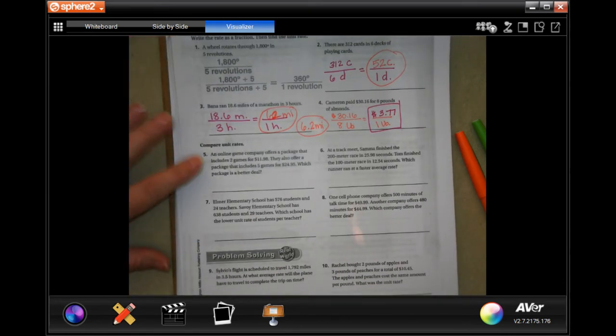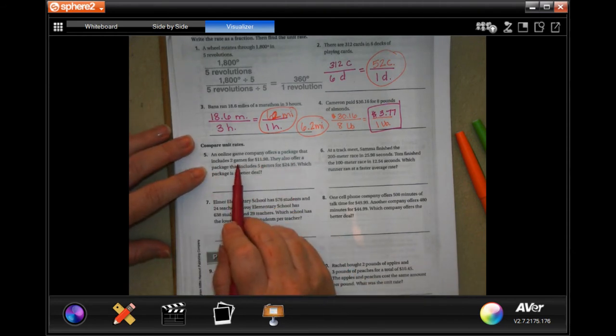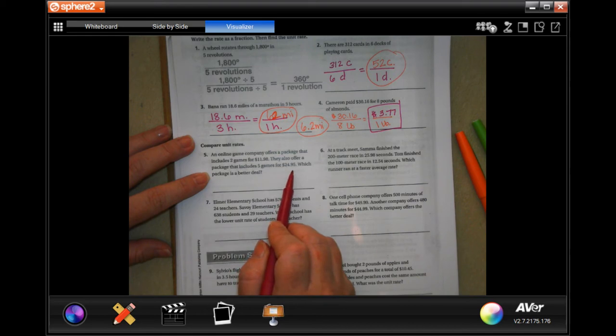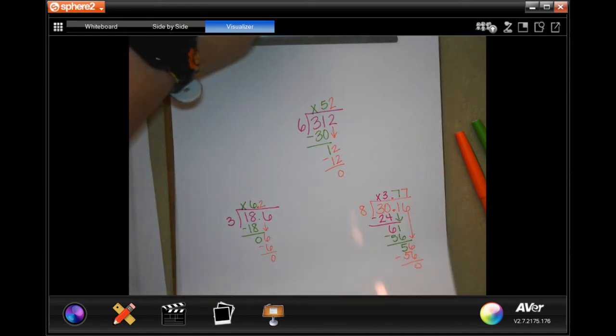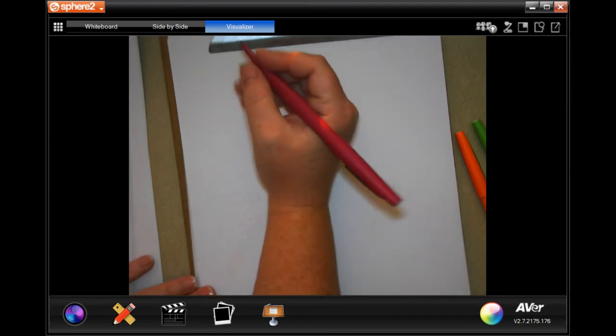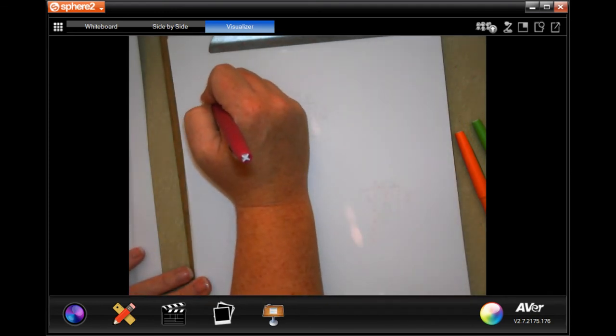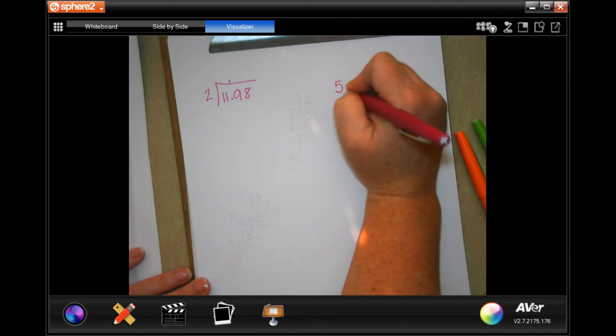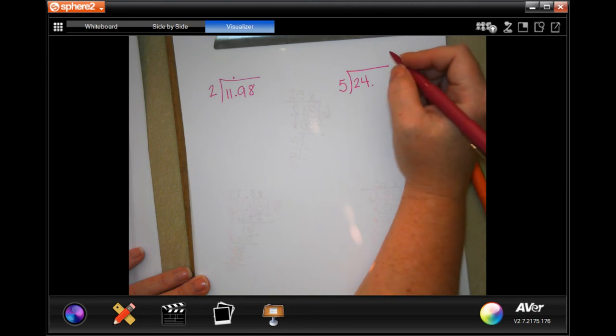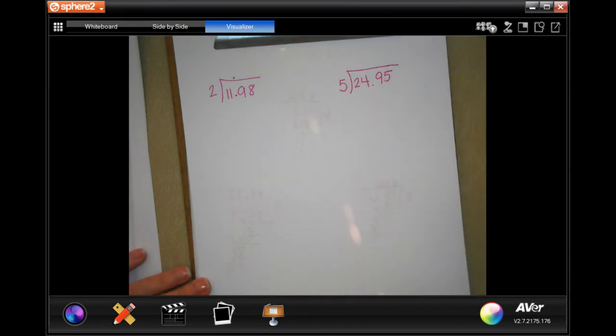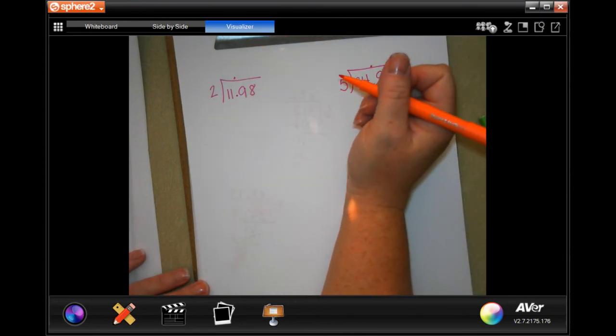You're going to compare unit rates. An online game company offers a package that includes 2 games for $11.98. They also offer a package that includes 5 games for $24.95. Which package is a better deal? So you need to do both of them because the price per game is what's going to tell you what's a better deal. The lower the price per game, the better the deal.